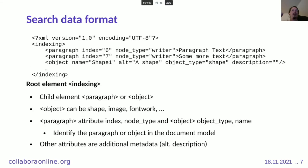The format has a root element 'indexing' and child elements of either 'paragraph' or 'object'. A paragraph represents one paragraph inside a document — any shape that has text is also exported as a paragraph. The 'object' element can be a shape, image, or fontwork, and is mainly used to provide additional metadata for the object so we can also search inside that metadata, not just paragraphs.